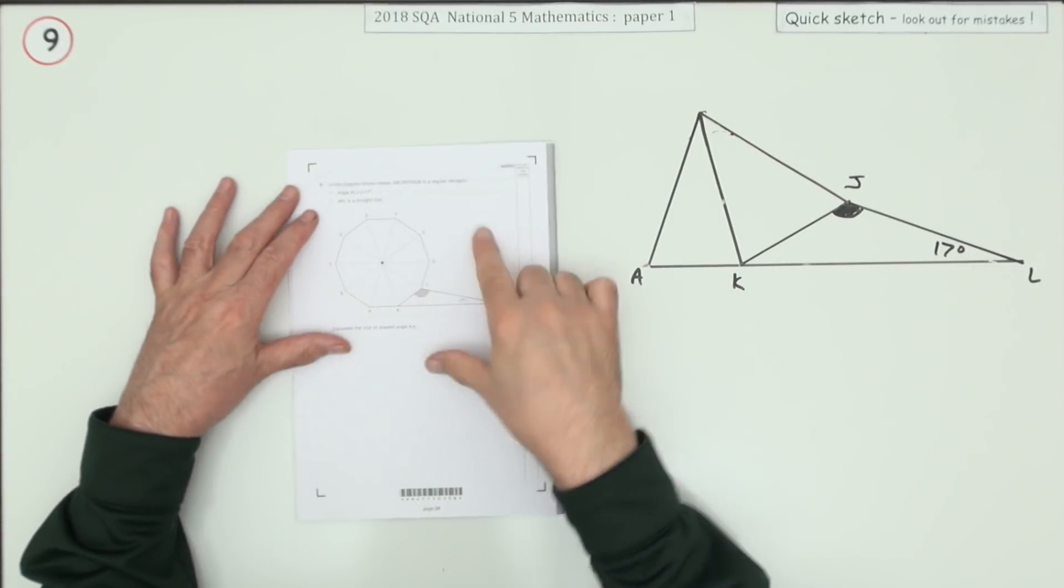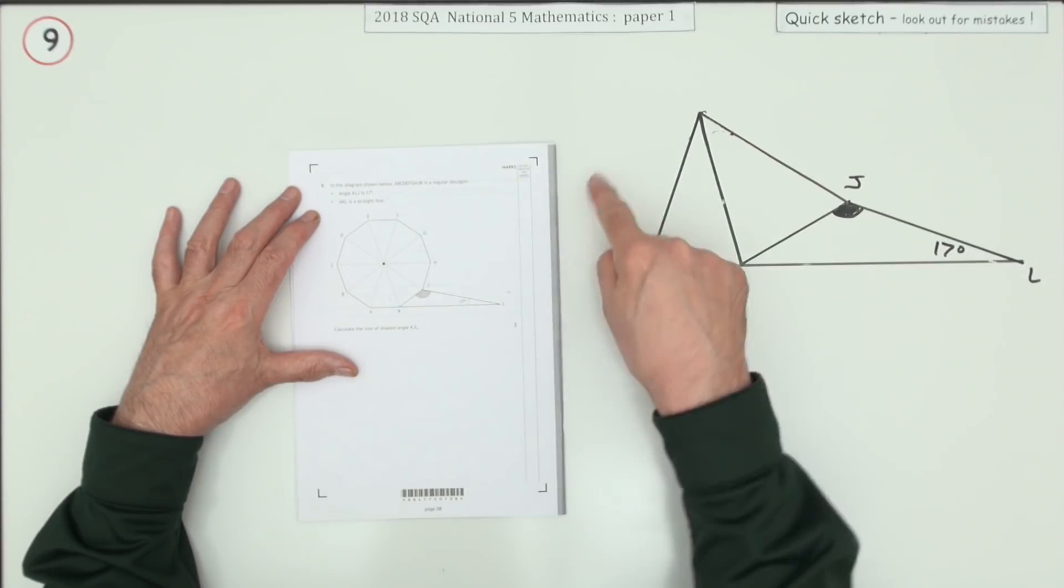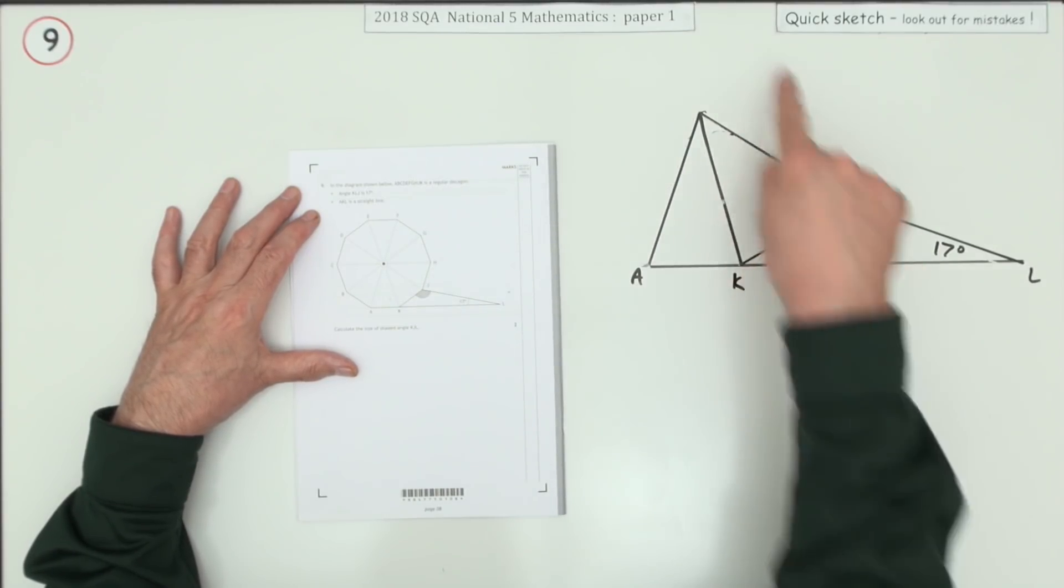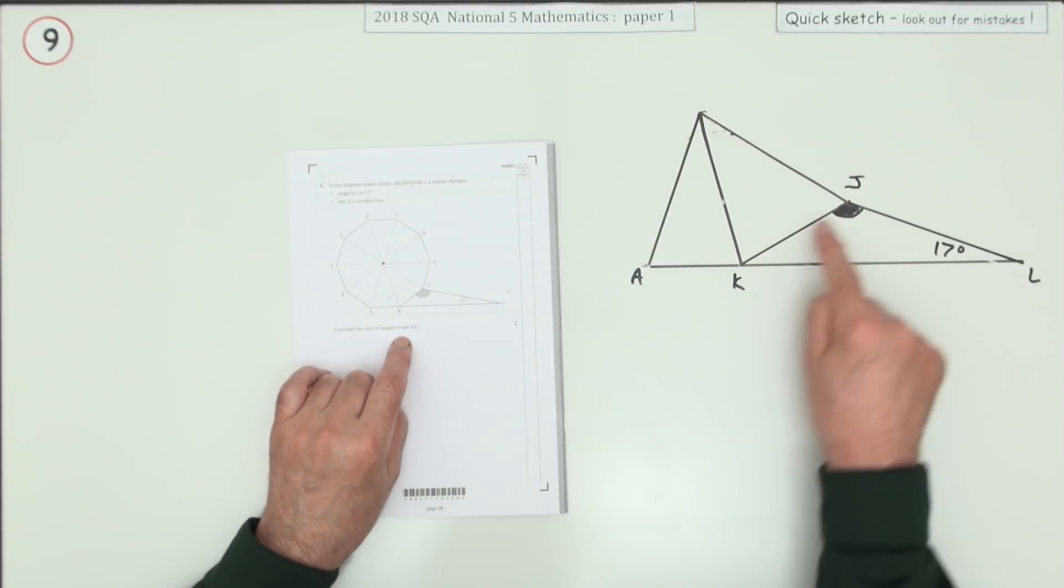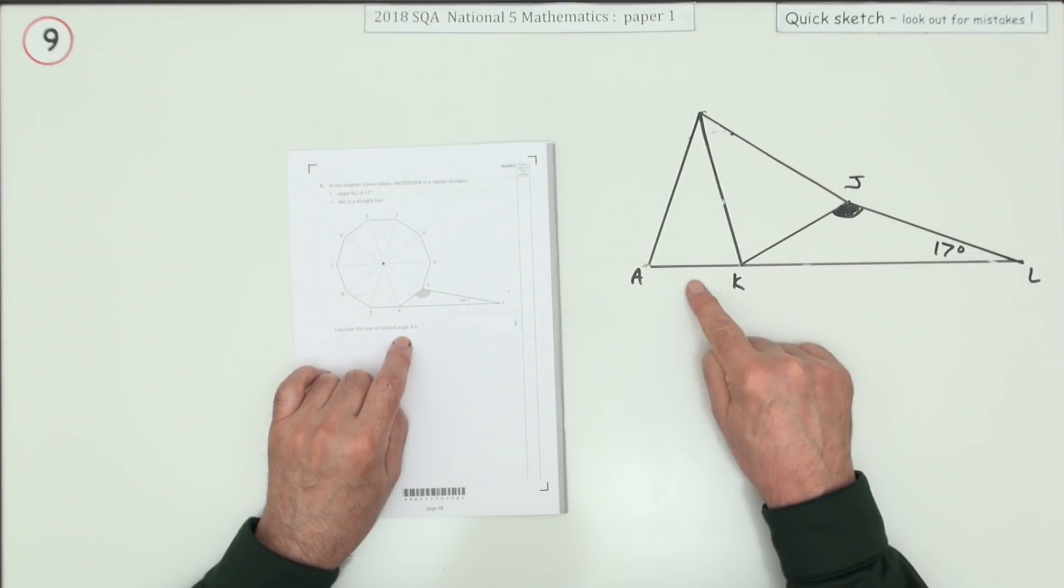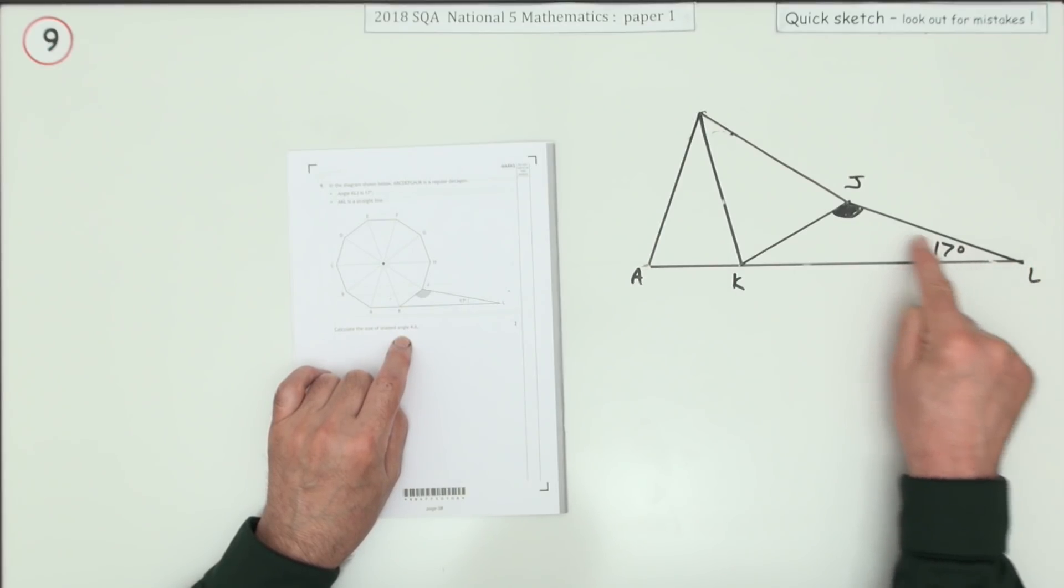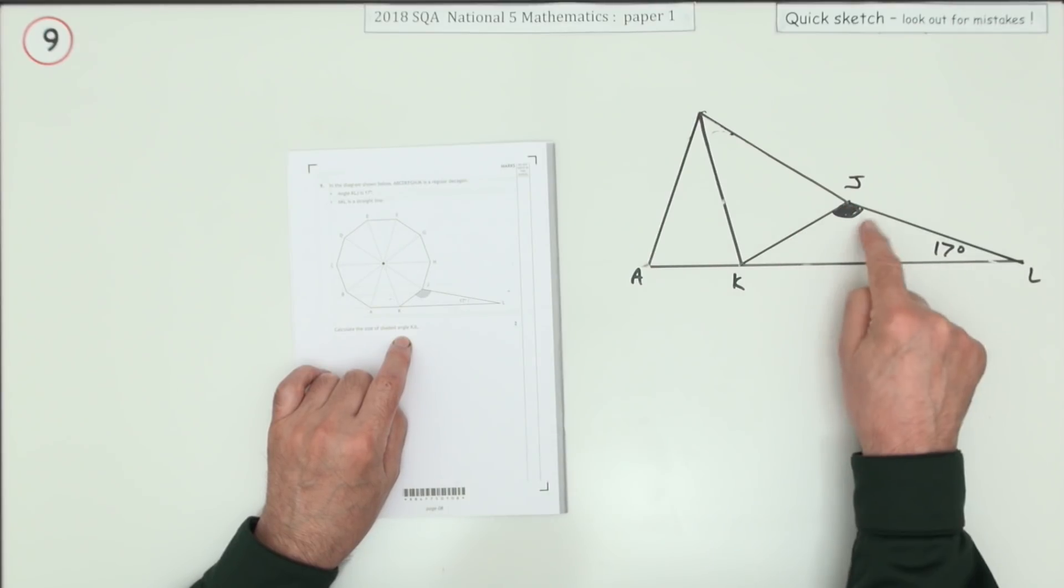Number nine. In the diagram, you've got a regular decagon. You can count the triangles if you like, but deca means ten. There are ten identical, ten congruent isosceles triangles making up this. There's an extra triangle sitting at the side which is in line with the base of one of them, and the angle that it makes to the other corner is 17 degrees. You have to find the size of this shaded angle.